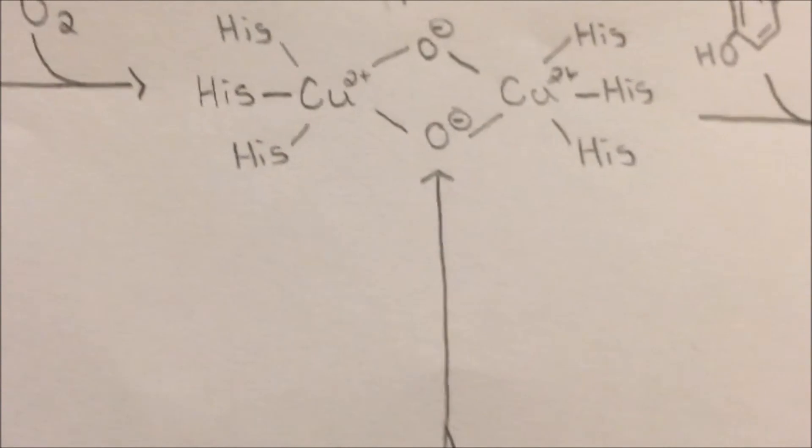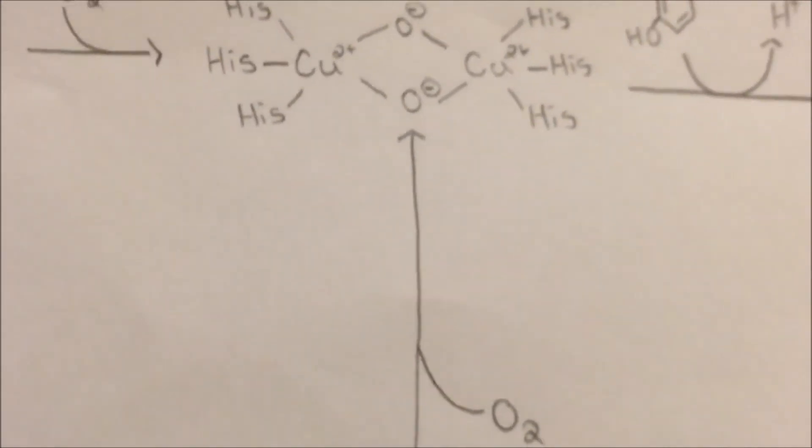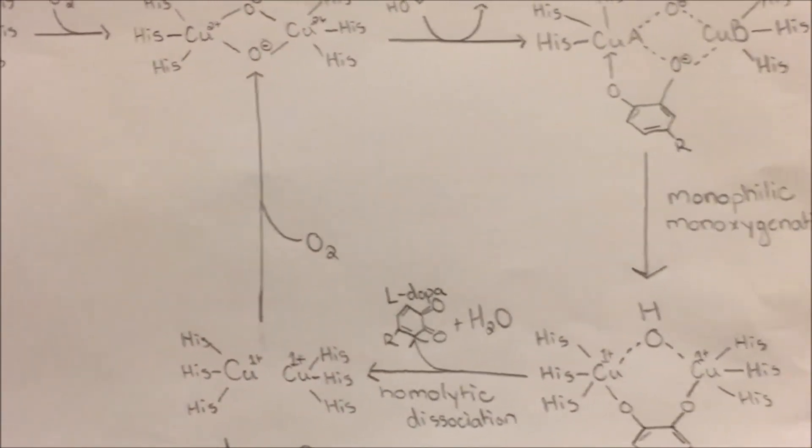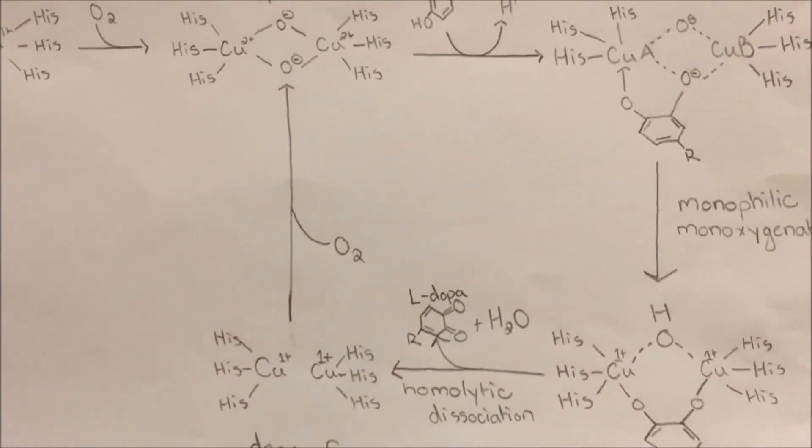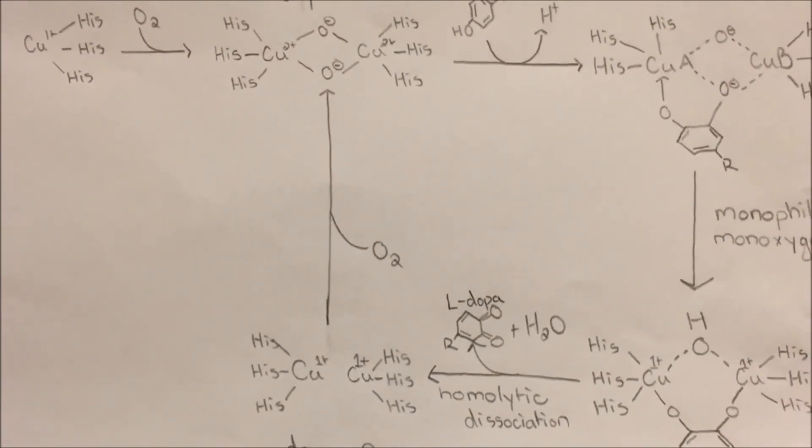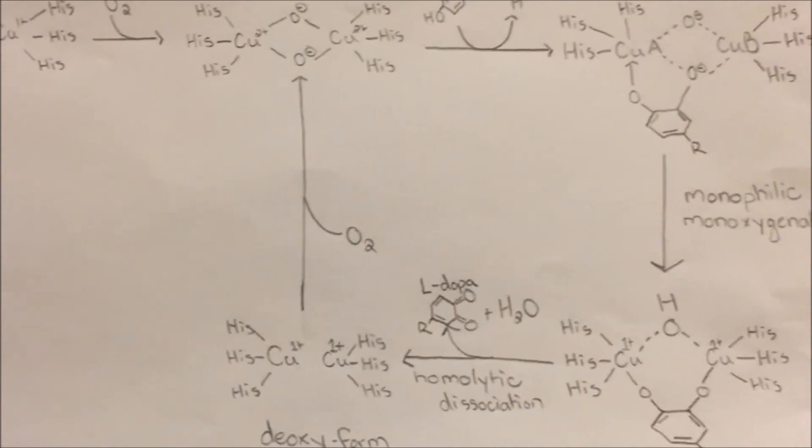Once the L-DOPA has been formed using the tyrosinase enzyme, it can then continue along its metabolic pathway and be converted into melanin, creating the pigmentation in tissues. However, this catalytic activity can easily be disrupted if there is a mutation in the gene or other malfunctions in the enzyme.